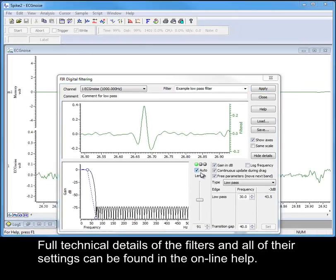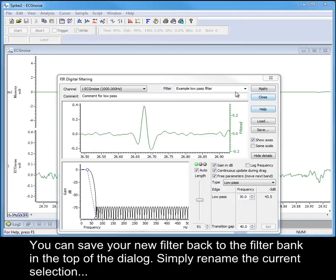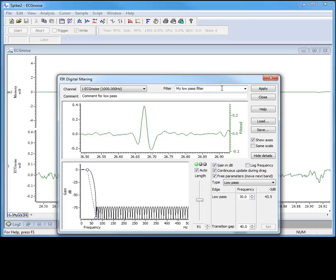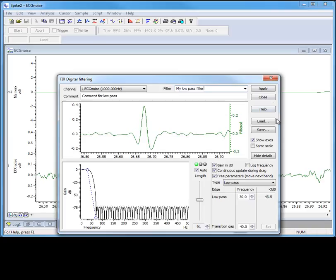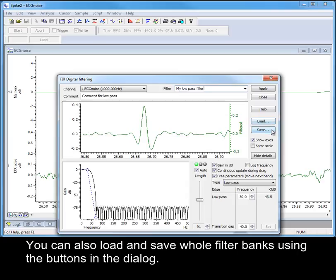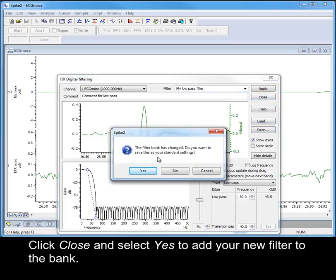Full technical details of the filters and all of their settings can be found in the online help. You can save your new filter back to the filter bank in the top of the dialog. Simply rename the current selection. And when we close the filter dialog, we will be given the option of adding our newly created filter to the current space in the filter bank. You can also load and save whole filter banks using the buttons in the dialog. Click Close and then select Yes to add your new filter to the bank.